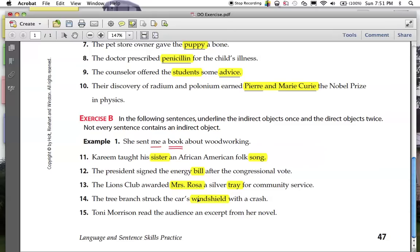Finally, Toni Morrison read what? An excerpt. Direct object. Who did she read that direct object? God, I'm going crazy. It's because I made all these videos in one night. Who did she read that excerpt to or for? The audience. Indirect object.